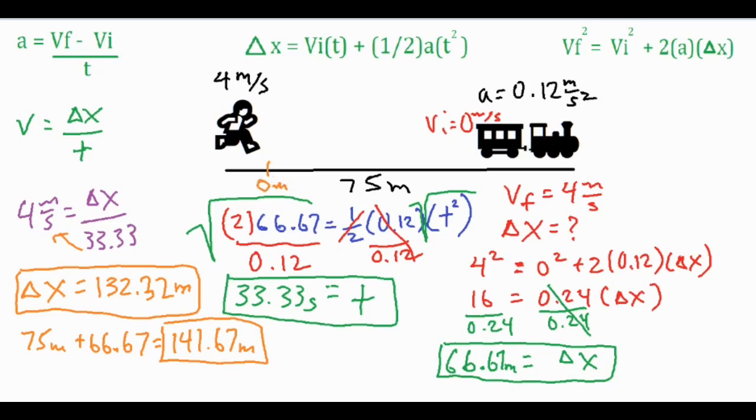We'll say the origin would be right over here at zero meters where the kid is starting off. So he does not catch the train. If we go ahead and subtract those two numbers, the 141.67 minus the 132.32, we get a separation of 8.35 meters that the kid is short of reaching the train.